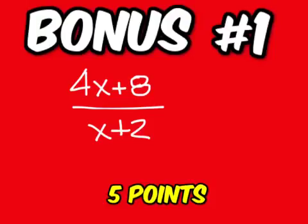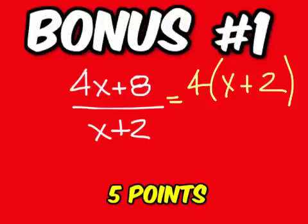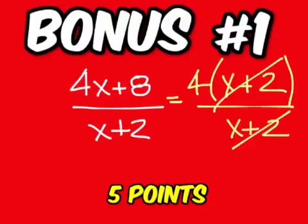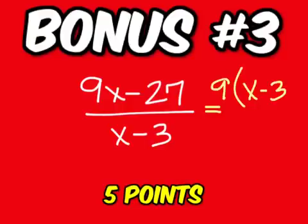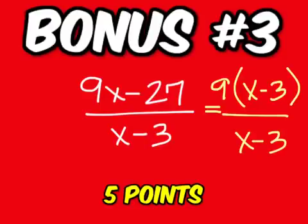A bonus problem. You can factor out a 4 on the top and be left with x plus 2. Those cancel out, so your answer is 4. Here's another bonus. You can factor out a 9 on the top and be left with x minus 3. So that cancels out. The answer is 9.